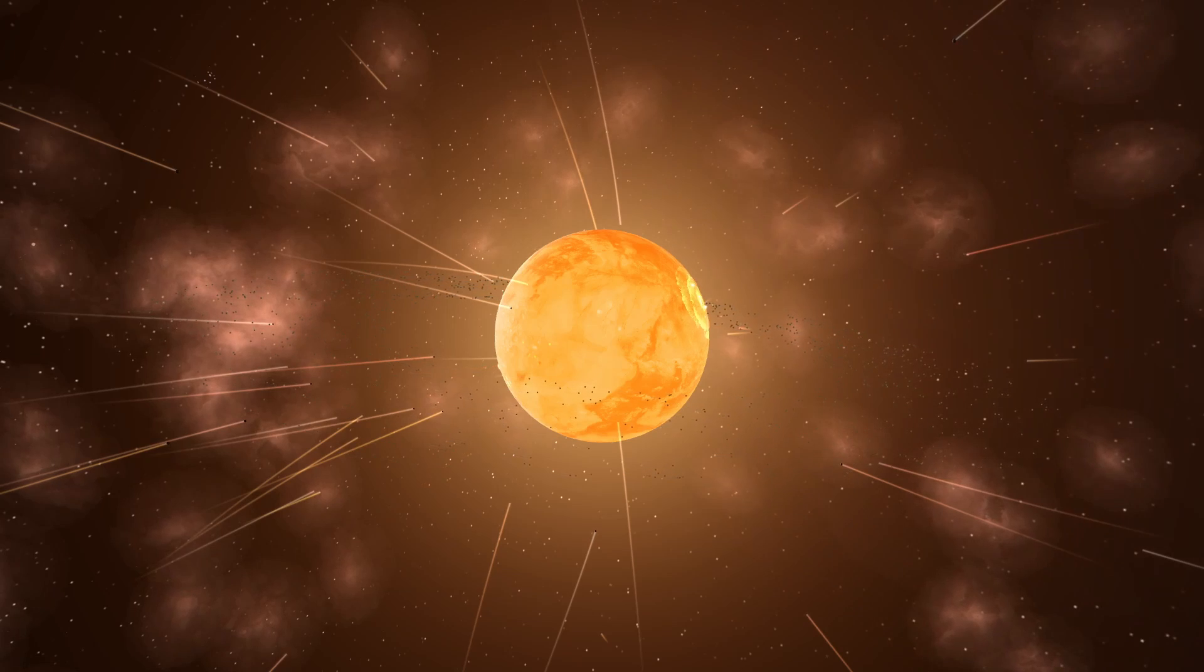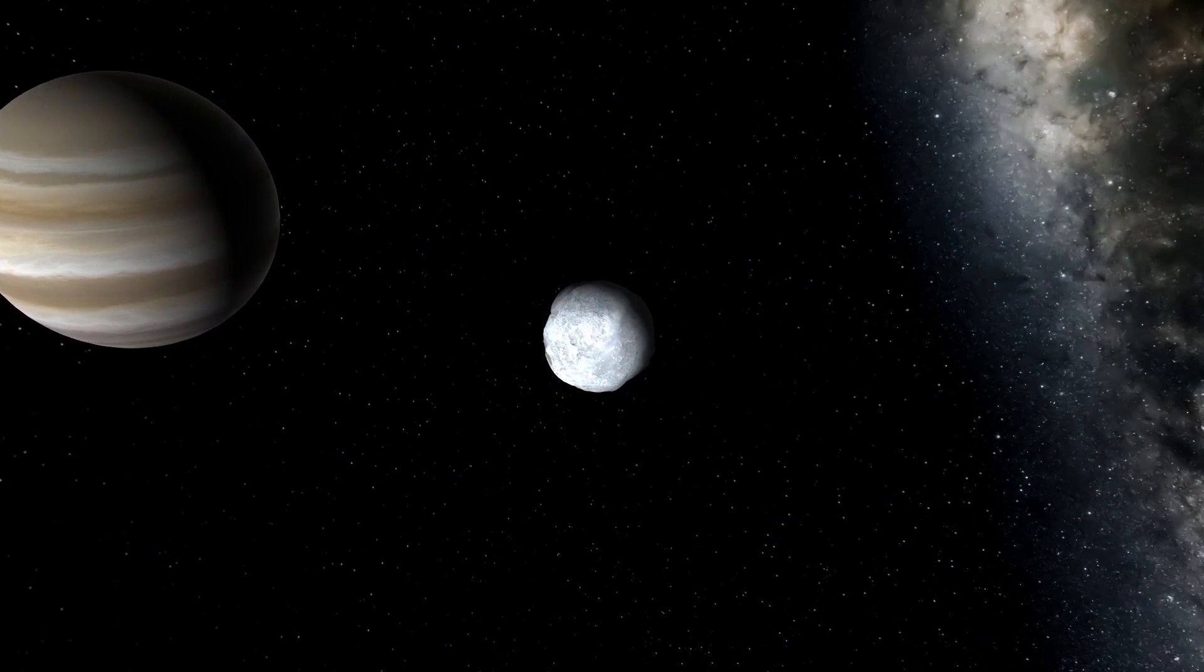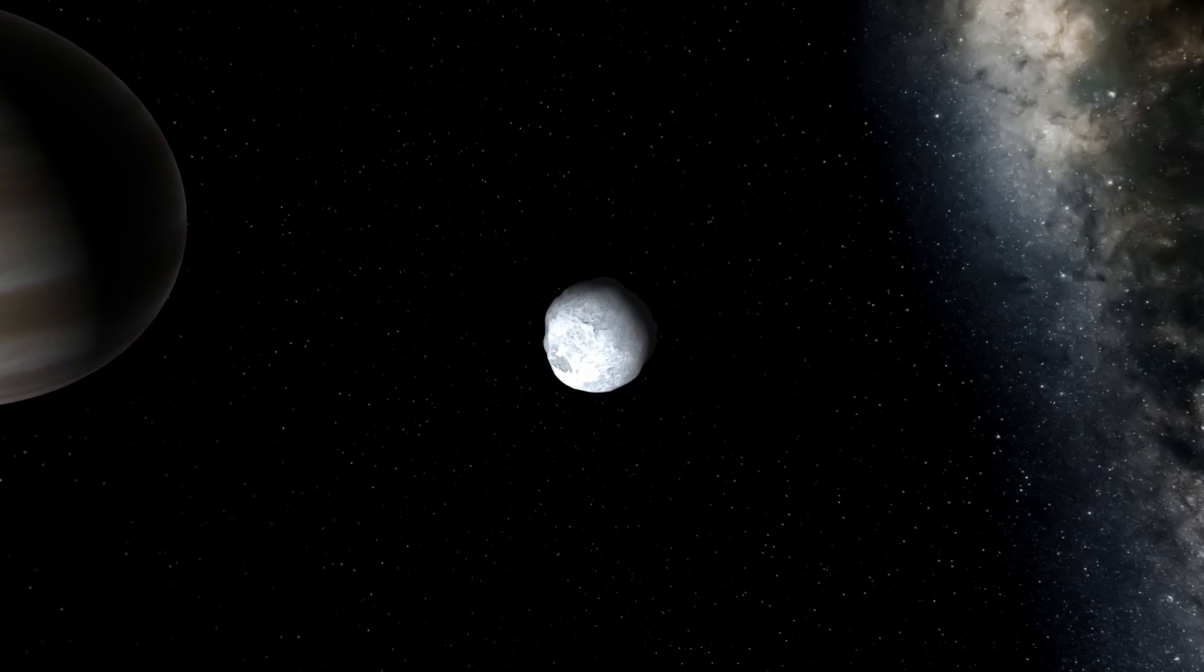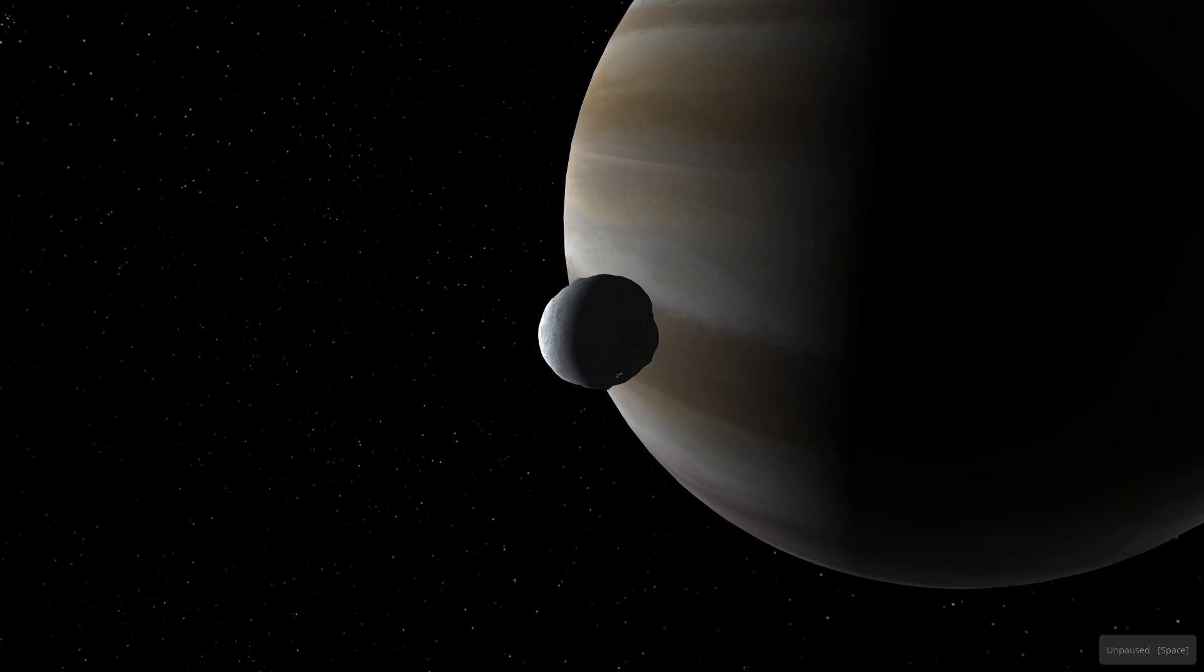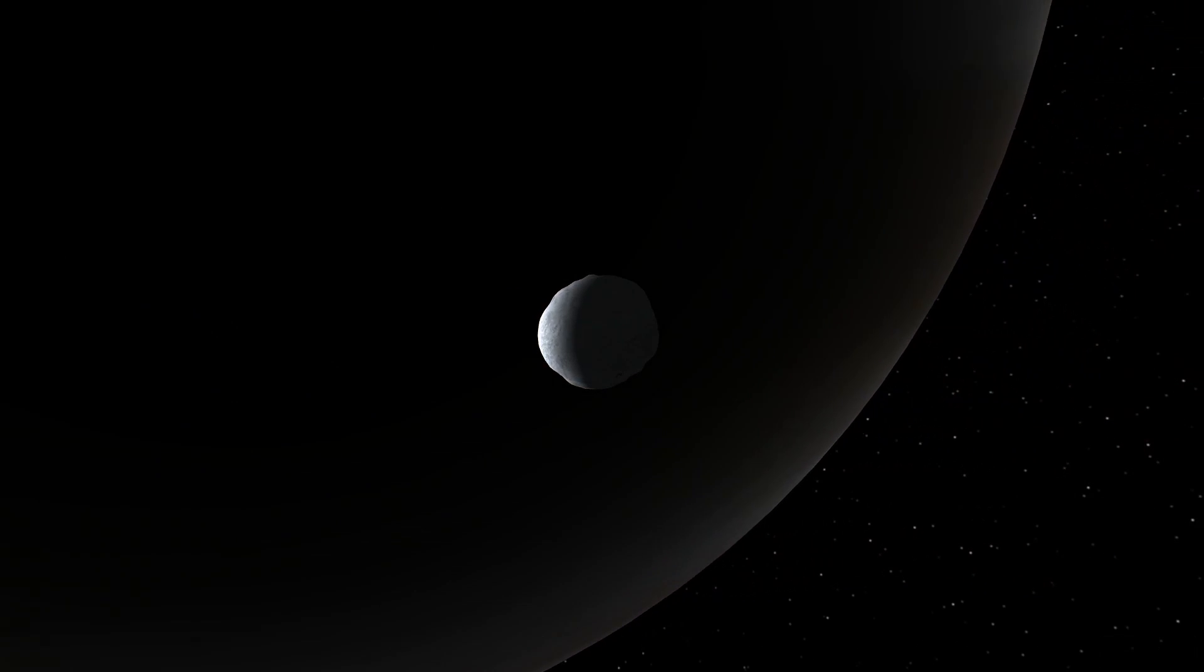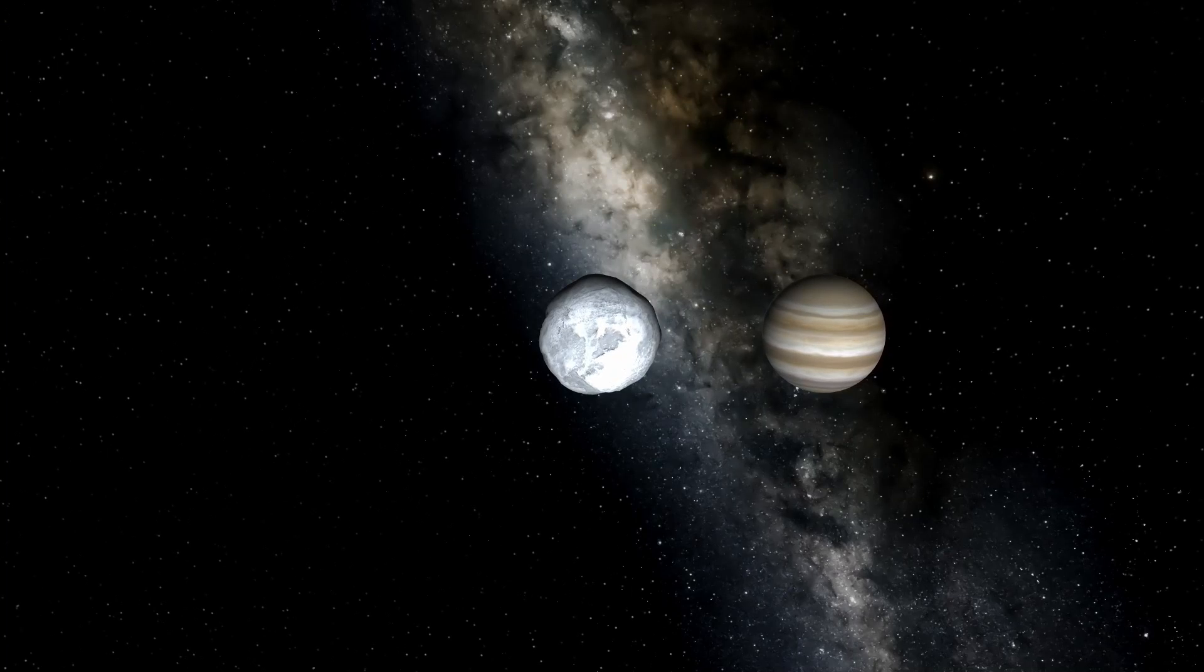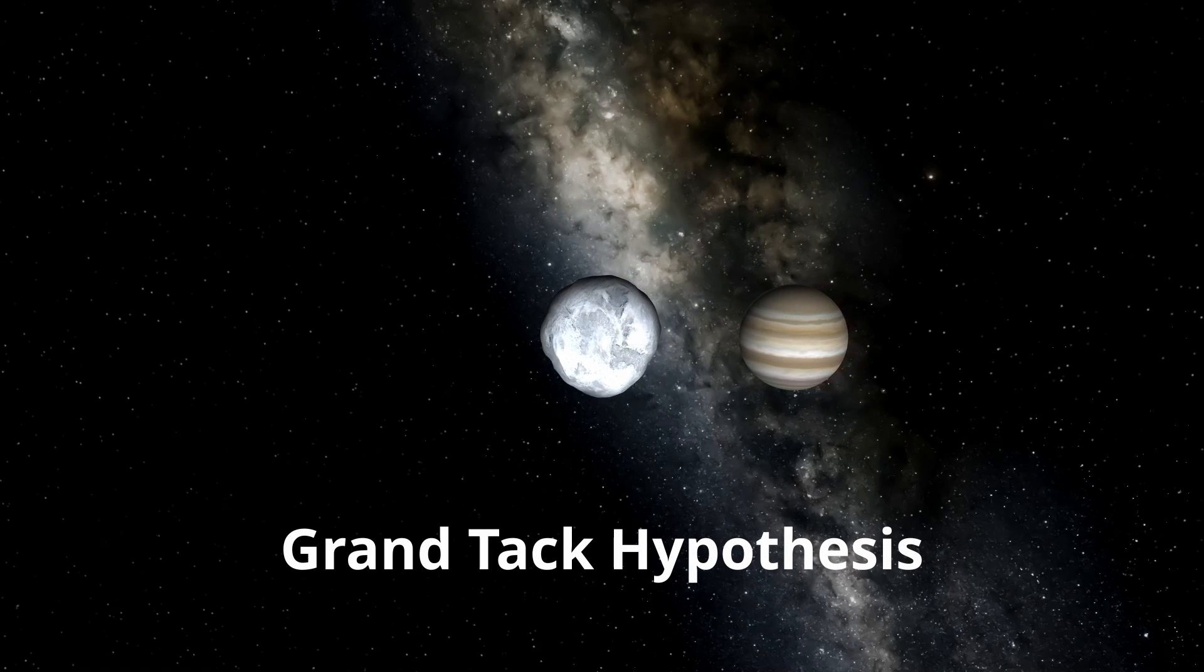Its orbit, however, was not stable during this period. Not all planetesimals near Jupiter would collide with it, many being ejected into the outer solar system or into interstellar space. Though very small compared to Jupiter, they still had a small gravitational pull of their own that influenced the giant planet ever so slightly. So for every ejected planetesimal, Jupiter would slowly and gradually migrate inwards towards the Sun. And this is known as the grand tack hypothesis.